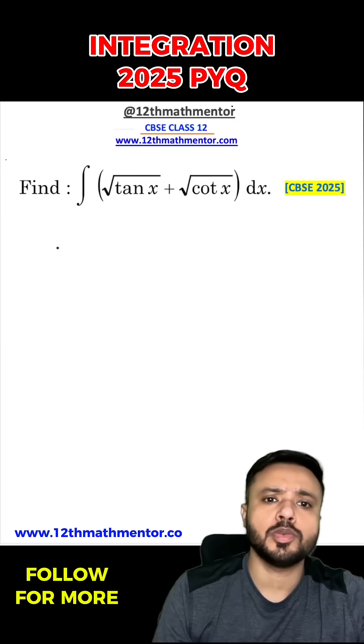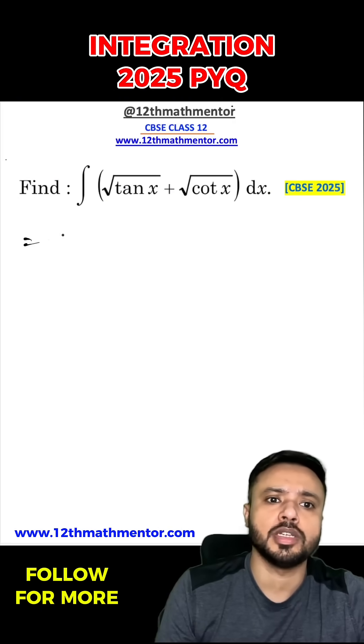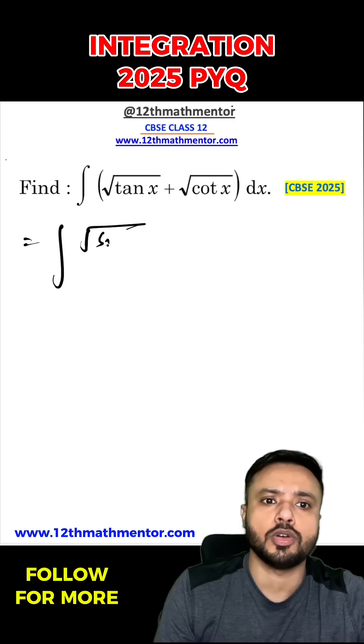The easiest way to solve the integral of root of tan x plus root of cot x with respect to dx, which was asked in CBSE 2025 class 12 math board examination, is to first convert everything in terms of sine and cos.